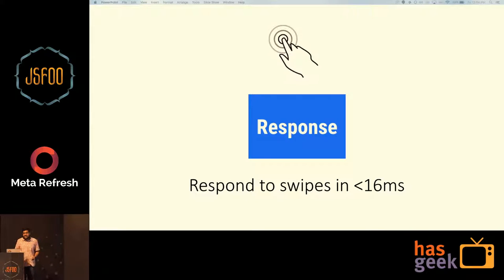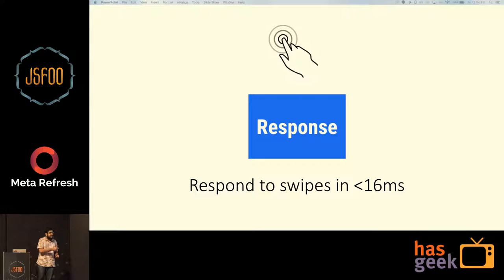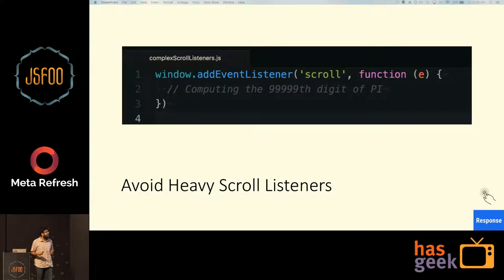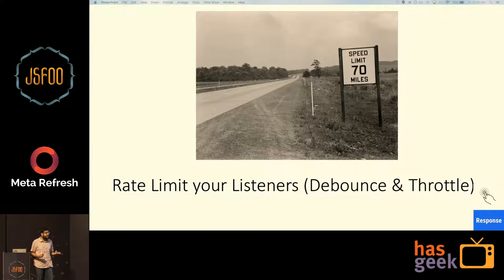Another section in the response category is response to swipes. You want 60 FPS. To get 60 FPS — 1000 divided by 60 — you have to respond in less than 16 milliseconds. To achieve that, avoid heavy scroll listeners, or if you can, just don't add them at all. You can rate-limit your listeners using debounce or throttle.